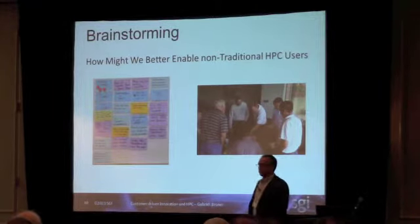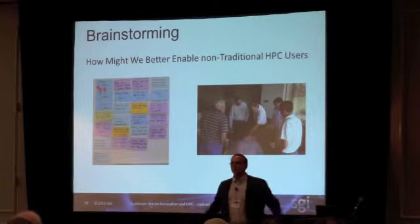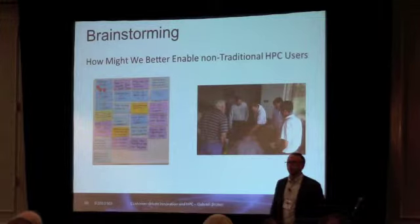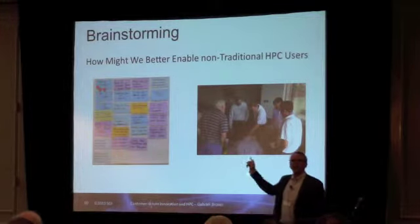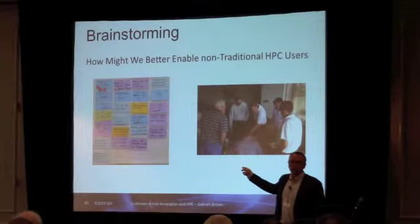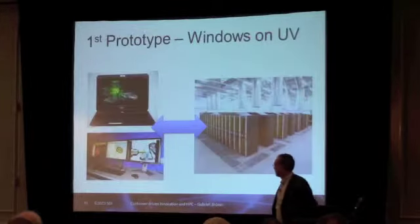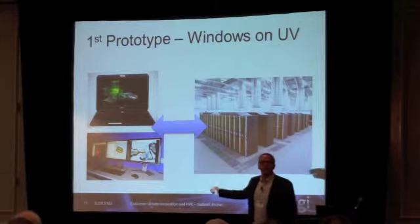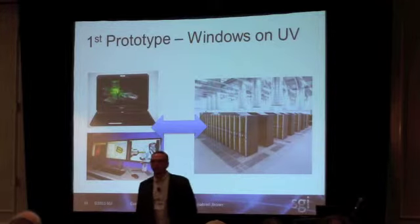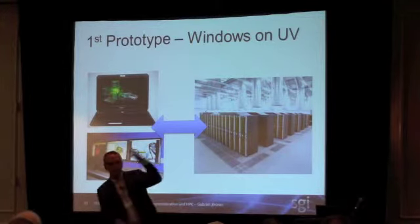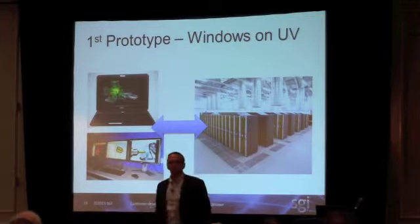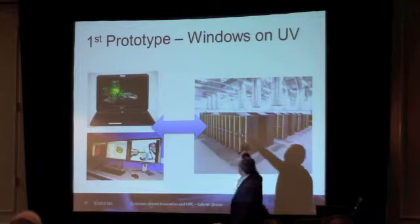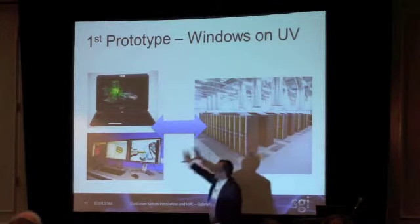And then we said: Windows support. We have our big UV system — we run Linux, you have to know Linux, you have to write parallel programming. But if you offer Windows support, you can run things from your desktop. After we selected that idea, we did a first prototype. How does a first prototype look? It looks like a picture or a PowerPoint presentation. I told the person thinking about the idea: you have 30 minutes to put together your idea on something — a PowerPoint or a poster. And this was his first picture: I'm at my desktop, running Windows on this big system, and sending visualization back.